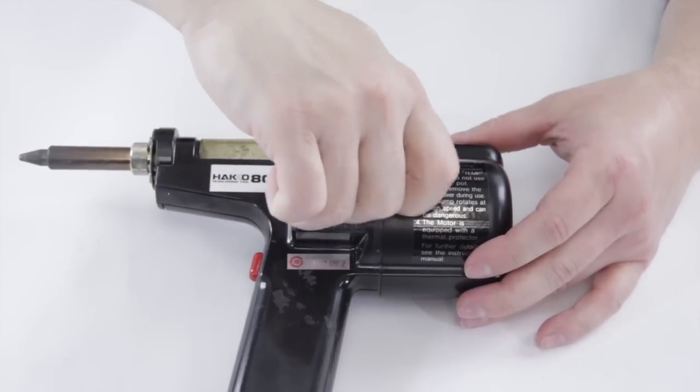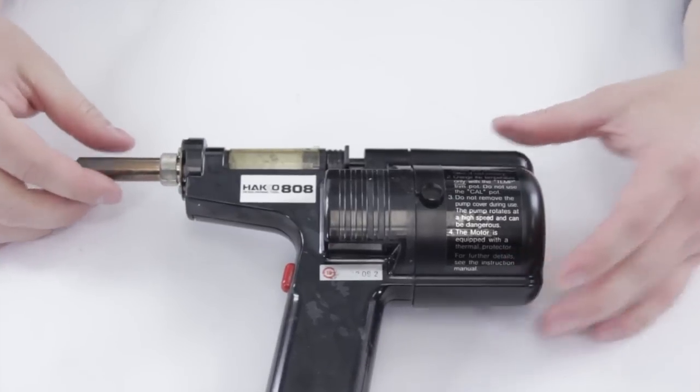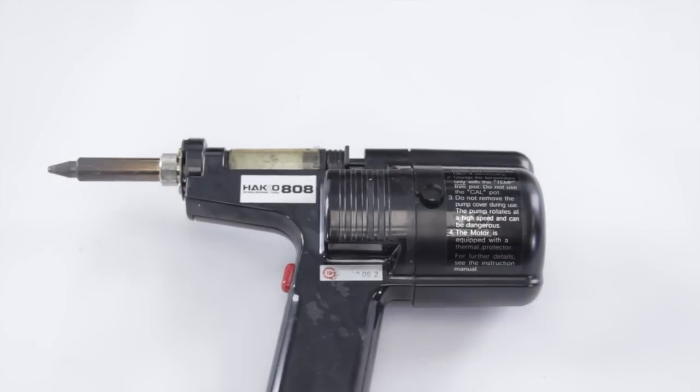Do the nut back up. We've just cleaned the motor on the Hakko 808 desolder gun.